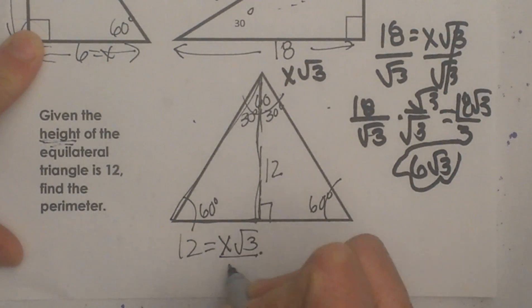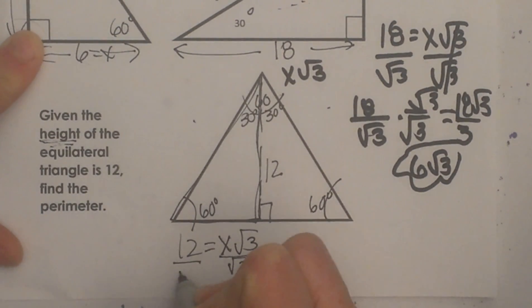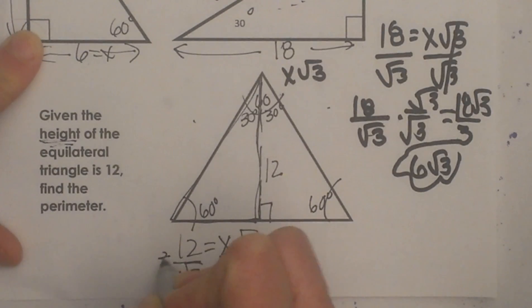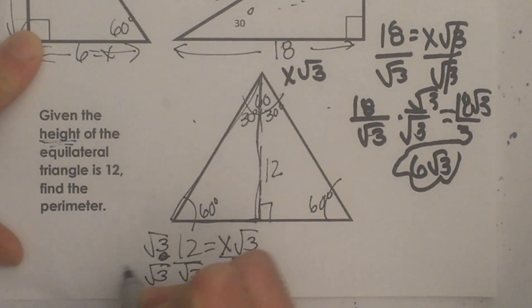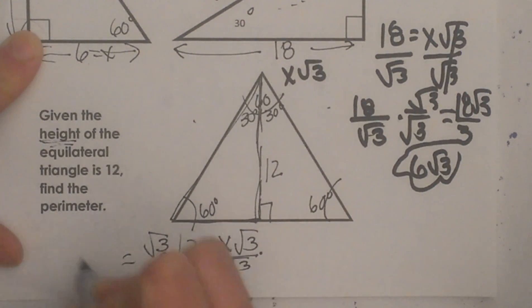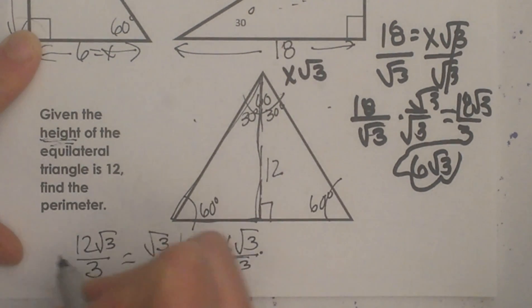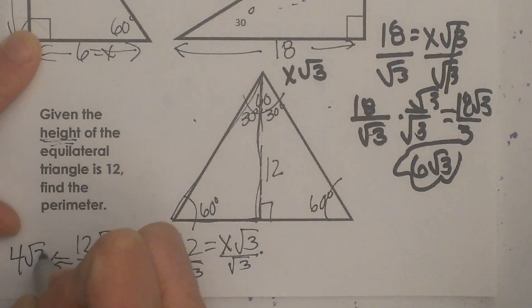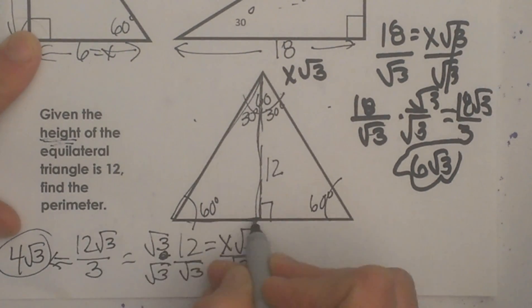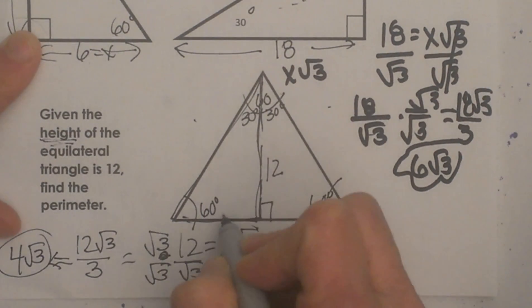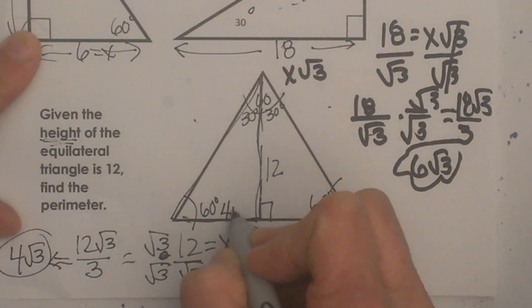To solve for x, I divide by root 3 on both sides and rationalize by multiplying by root 3 over root 3. That gives me 12 root 3 over the square root of 9, which is 3. That simplifies to 4 square root of 3, so the length of this side of the triangle is 4 square root of 3.